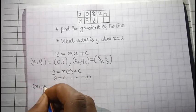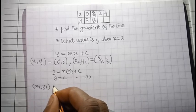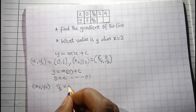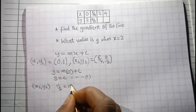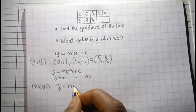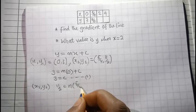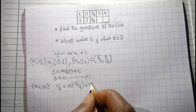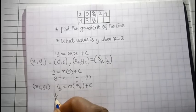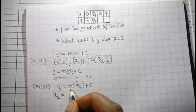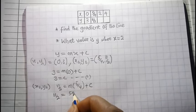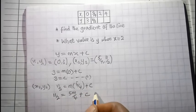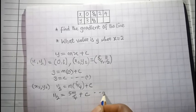For x2, y2 we have 11 over 2 equal to m multiplied by x2, which is 5 over 4, plus c. So 11 over 2 equals 5m over 4 plus c. We call this equation number 2.